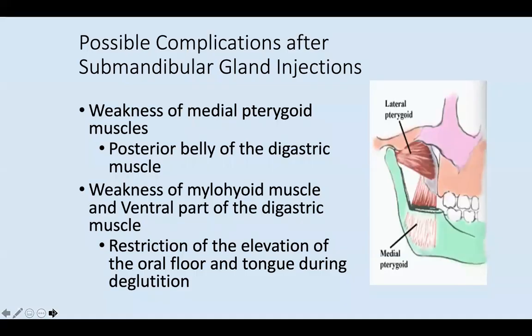If you inject in the wrong place near the submandibular glands, you can cause weakness of the medial pterygoid, causing the jaw to drop. The posterior belly of the digastric muscle can also get weaker, along with the mylohyoid and ventral digastric, resulting in restriction of elevation of the oral floor and tongue during swallowing. The lateral pterygoid is the mouth-opening muscle, while the medial pterygoid underneath the mandible is the mouth-closing muscle.